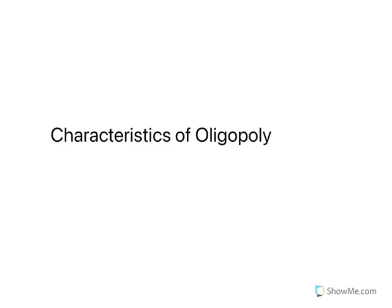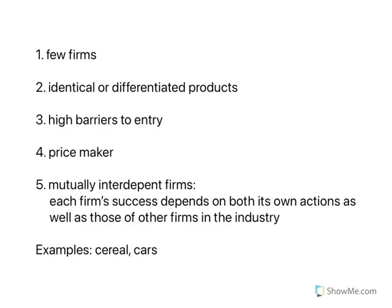But in this video, I just wanted to talk about the major characteristics of this market structure. The first one is that there are few firms in the industry. In fact, sometimes you'll see the term duopoly — the word 'duo' means two, so if you had two firms it's called a duopoly.